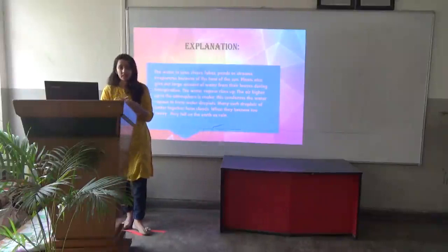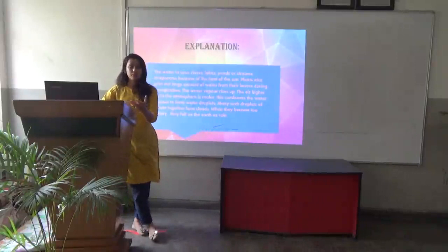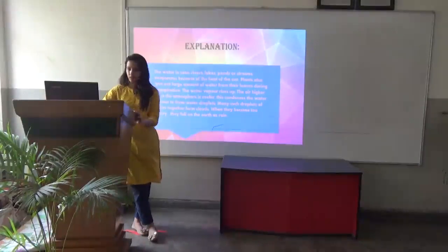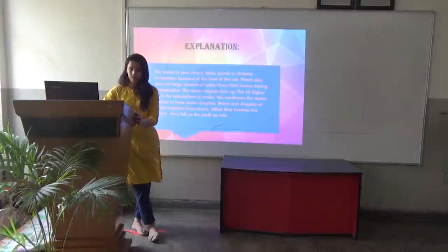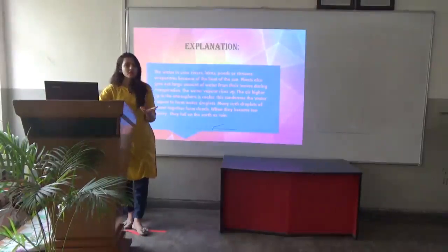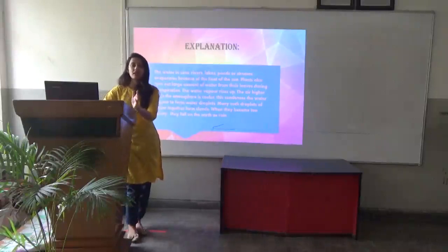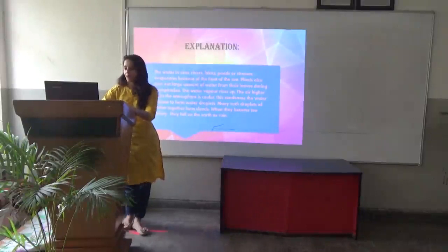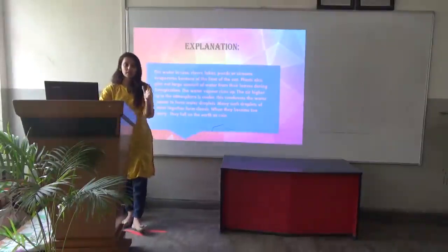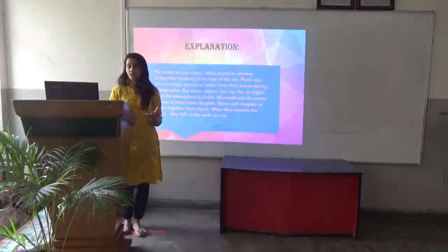Now the explanation of the water cycle — how does it all happen? The water in seas, rivers, ponds, or streams evaporates because of the heat of the sun. Plants also give out a large amount of water from their leaves during transpiration. The water vapour rises up, and as it rises, the air above is slightly cooler. This condenses the water vapour and therefore forms water droplets. Many such droplets come together and form clouds. When they become too heavy, they fall on the earth in the form of rain.